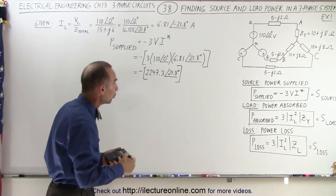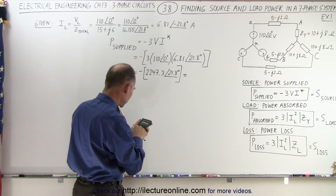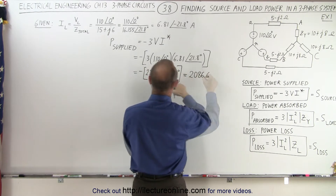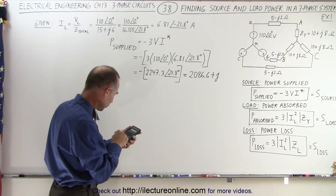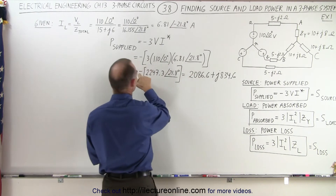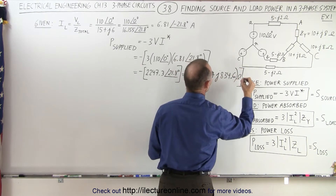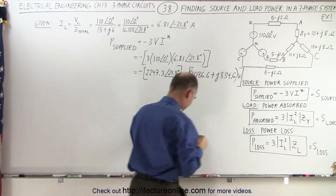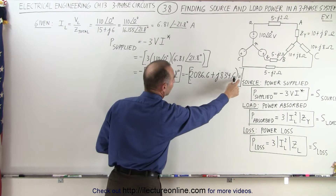Now we convert that into real and imaginary parts. Take the cosine of 21.8 degrees and multiply times 2247.3 — that gives us 2086.6. Then take the sine of 21.8 degrees and multiply times 2247.3 — that gives us 834.6. We need the negative in front, so the power supplied is negative (2086.6 + j834.6) watts. So that's the real part and imaginary part of the power supplied, in watts.